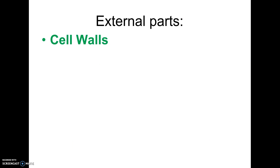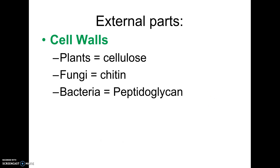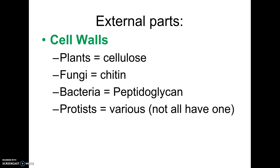Outside of cells, some cells have cell walls — we covered this before. Plants have cell walls of cellulose. Fungi have cell walls of chitin. Bacteria have cell walls of peptidoglycan. These are all different polysaccharides from our biochemistry chapter. Protists — some have cell walls and some don't; it depends on the type. The only kingdom where no members have cell walls is the animal kingdom.